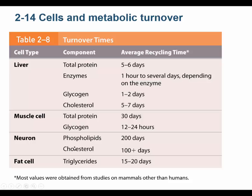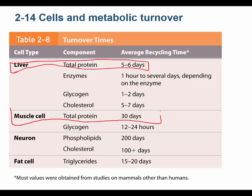Looking at turnover: if you look at protein in the liver, the liver turns over its total protein about once a week. But a muscle cell doesn't turn over protein that fast — the protein in a muscle cell lasts about a month. That's a good thing; you don't want to be constantly breaking down muscle cell protein. There is always some turnover — building new and breaking down what's there — but muscle protein is much more stable and lasts longer.